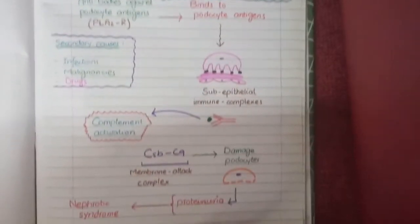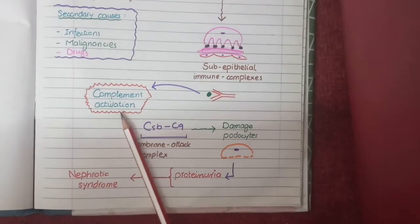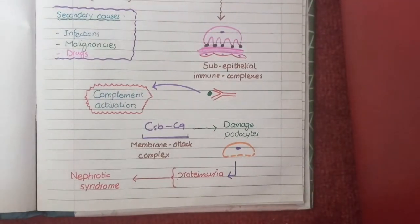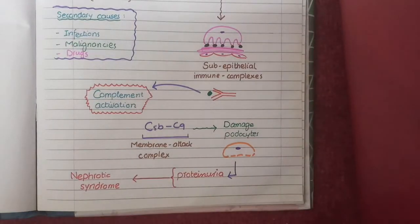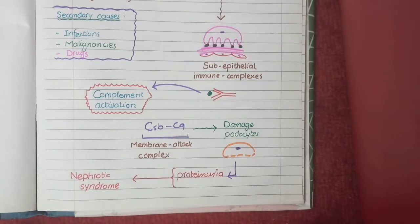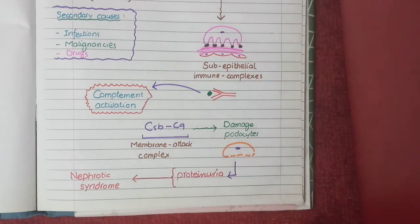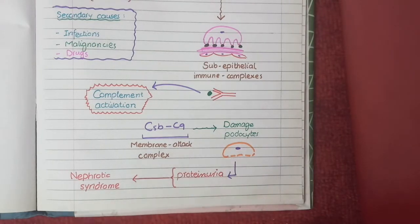IgG antibodies, which are part of these immune complexes, mediate the activation of the complement system pathway. This leads to formation of a complex of complement proteins known as the membrane attack complex, composed of complement proteins C5 to C9. Once formed, this membrane attack complex causes damage to podocytes. This damage occurs specifically at the epithelial podocyte level because the immune complexes were sub-epithelial in location.